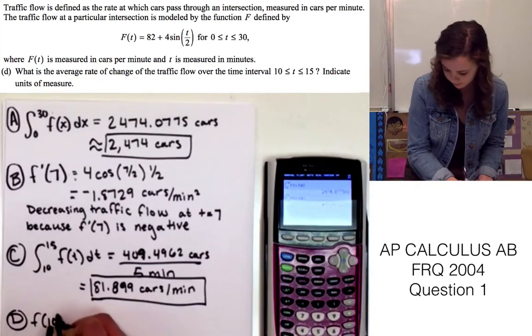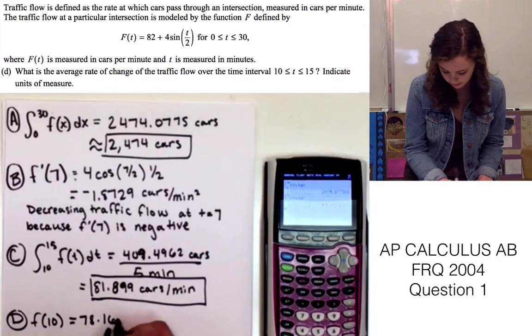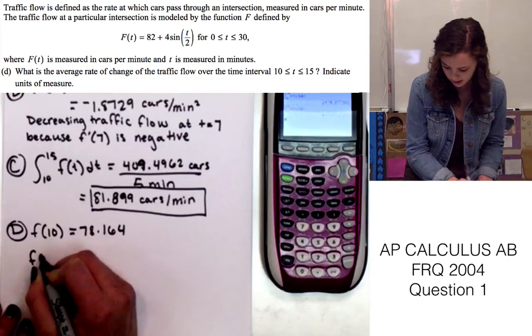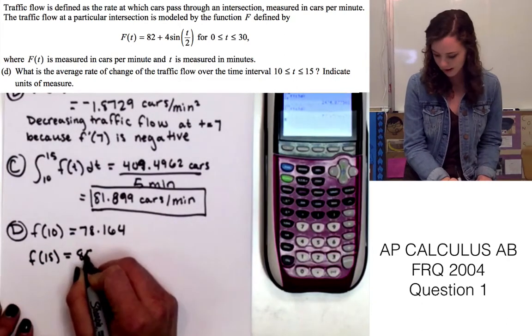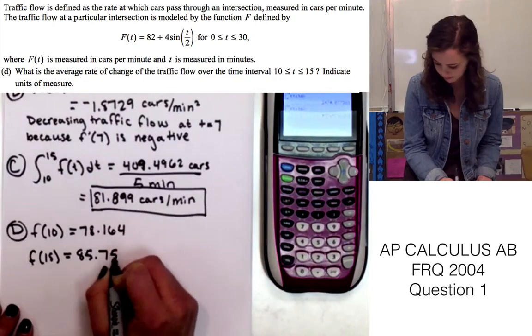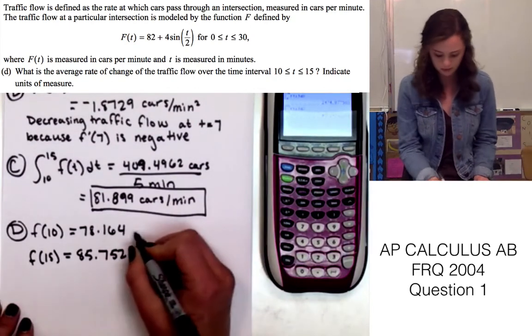So we're going to first find f(10), which equals 78.164, and f(15), which equals 85.752. And these are both in cars per minute.